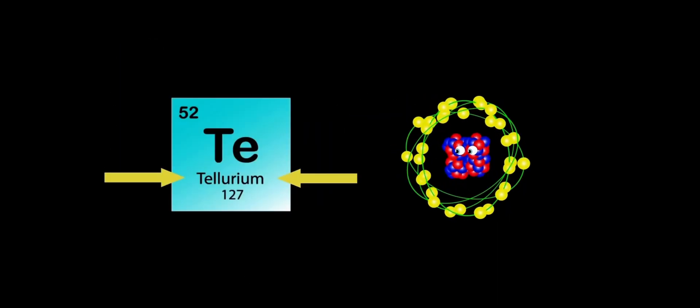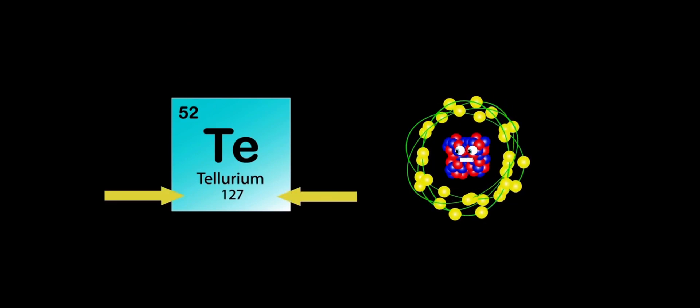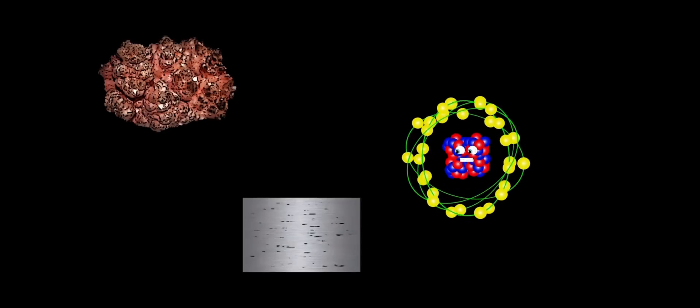I am Tellurium, my atomic number is 52, my atomic mass is 127, Te is my symbol, true. I'm used in alloys, mostly with copper and stainless steel, I improve their machinability, it's part of my deal.